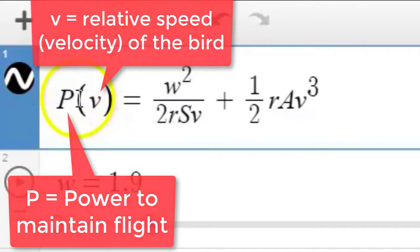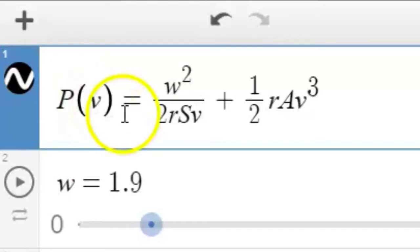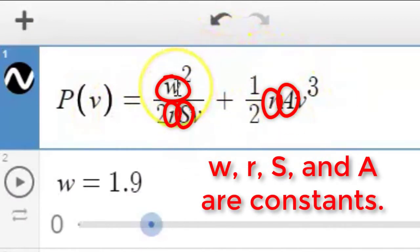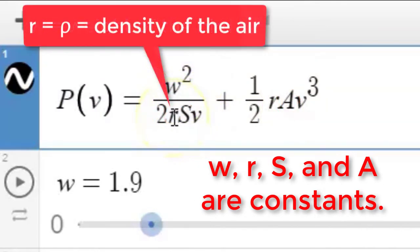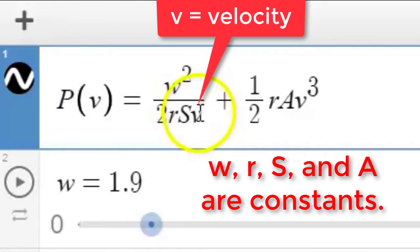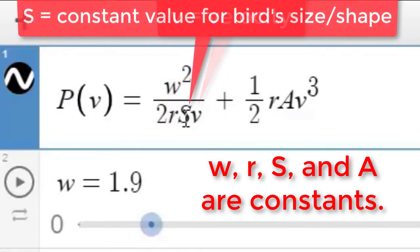Now those are the only two quantities that we're going to allow to vary in this function. All the other variables you see here are constants. For instance, W is the weight of the bird. R is, on the board you'll see later, R is the Greek letter rho, which is representing the density of the air while the bird is flying. There's V again, the velocity that we're talking about. S is a constant, a positive constant associated with the bird's size and shape. So for different kinds of birds, Pennycuick would have used different values to represent the bird's particular size and characteristics, size and shape.